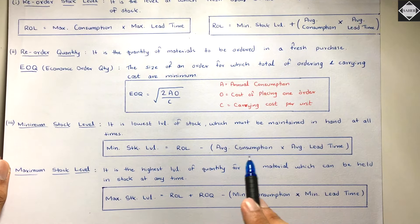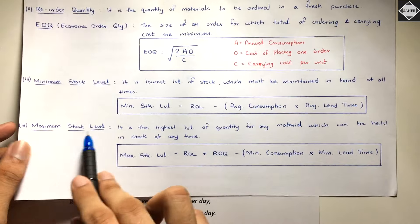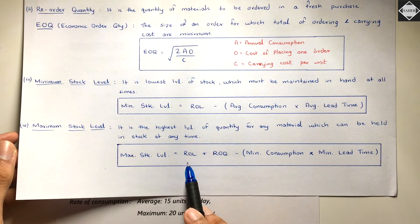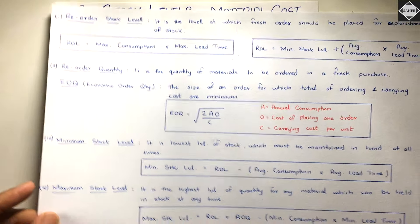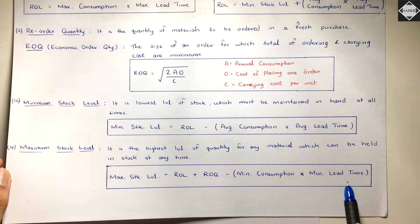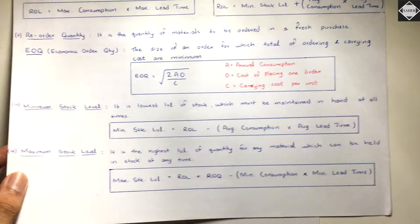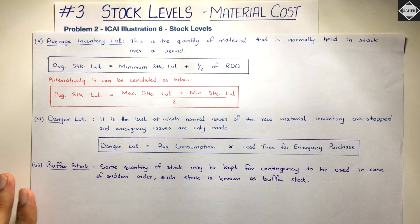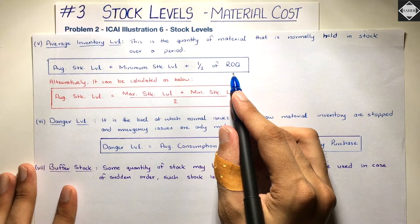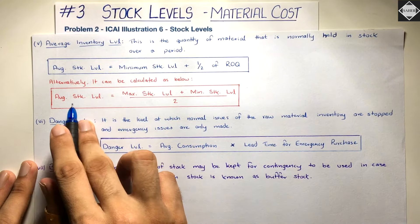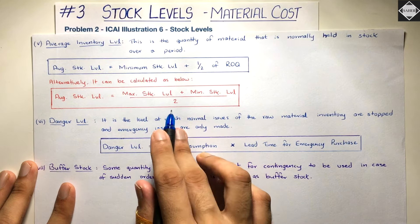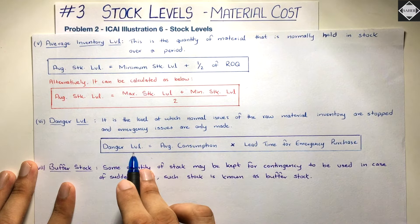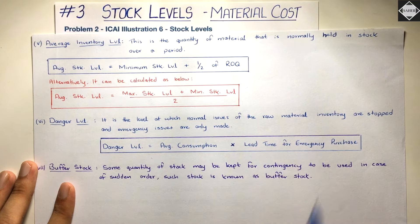Minimum stock level is: reorder level minus average consumption into average lead time. Maximum stock level is: reorder level plus reorder quantity minus minimum consumption into minimum lead time. Then average inventory level is: minimum stock level plus half of ROQ. There's also another formula: maximum stock level plus minimum stock level divided by two. And danger level formula is: average consumption into lead time for emergency purchase.